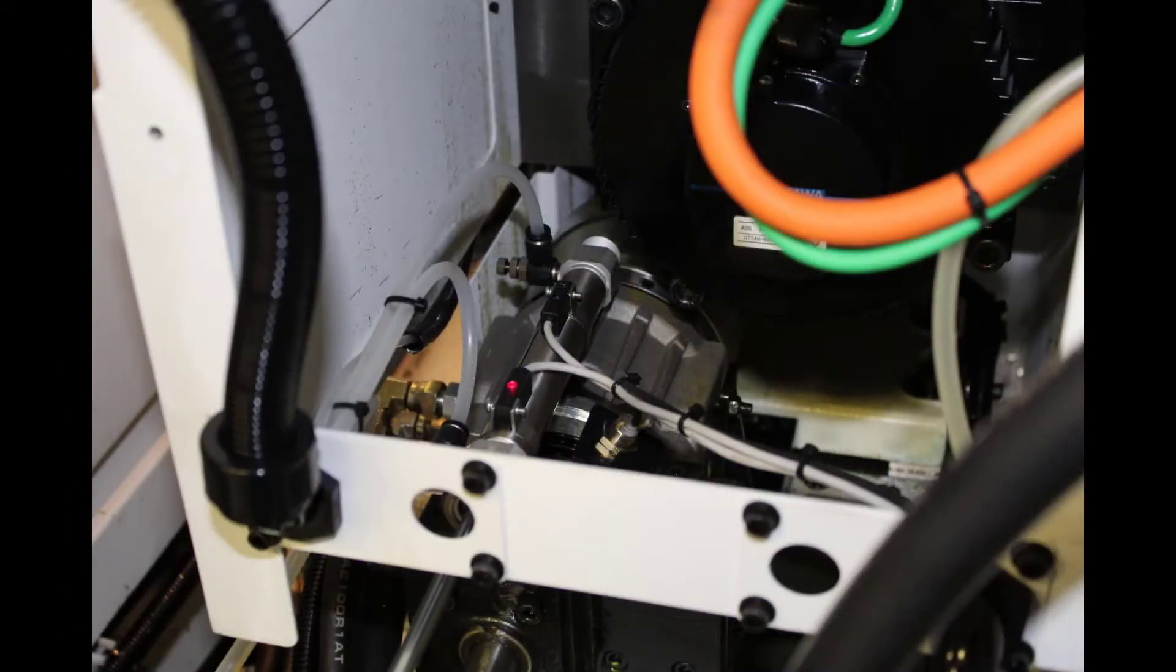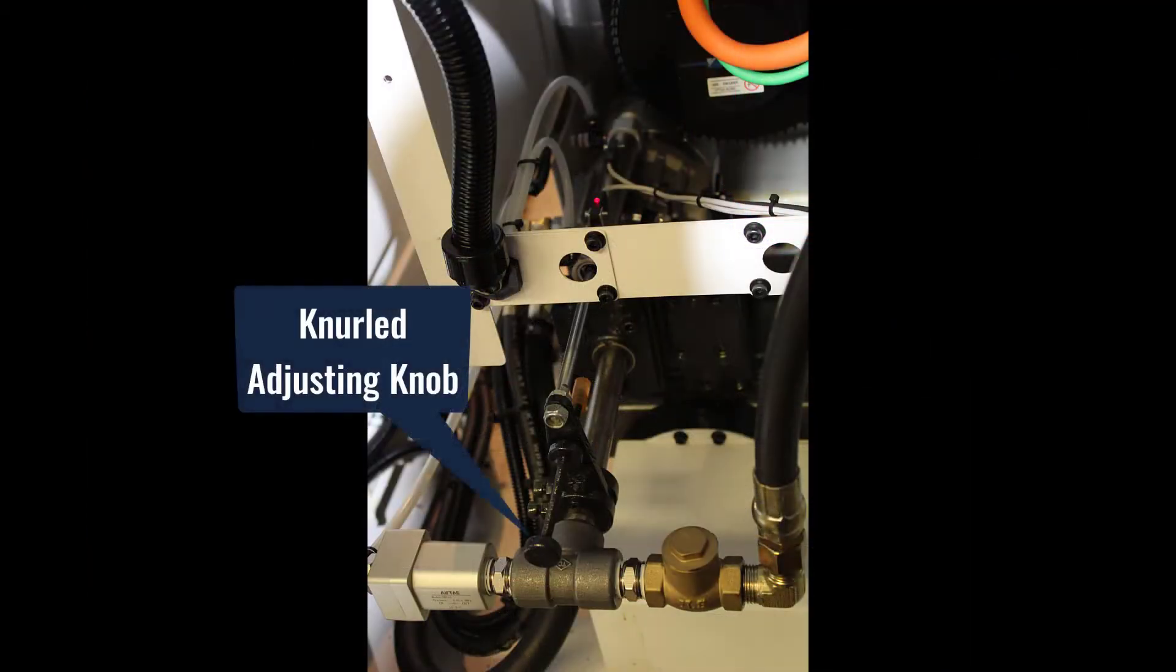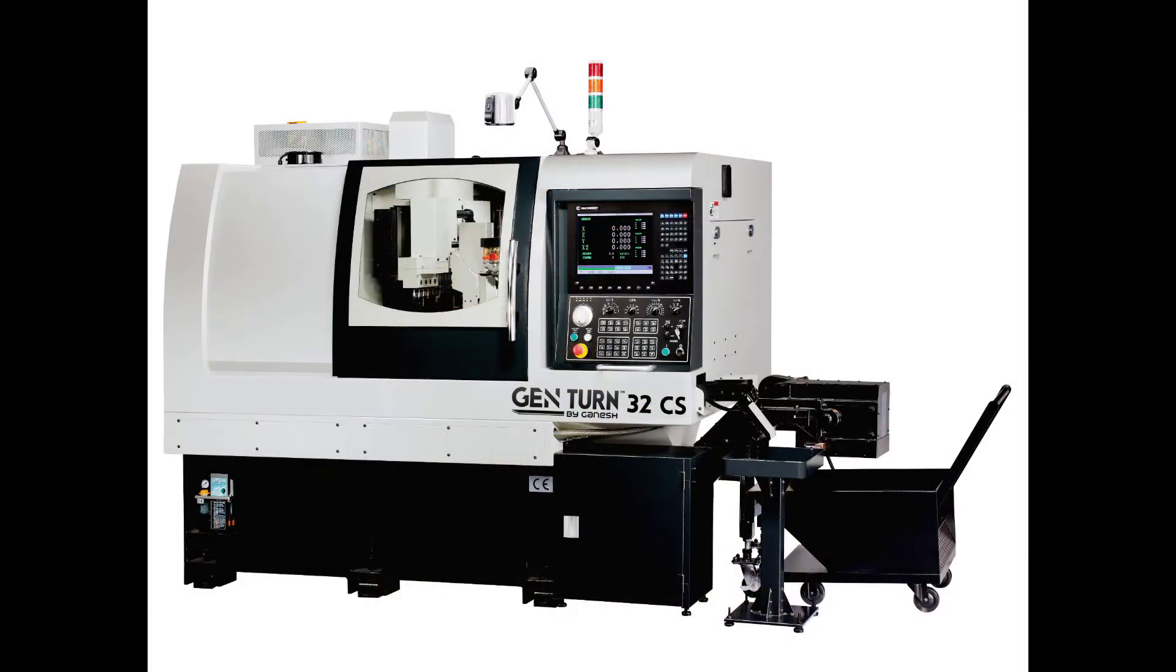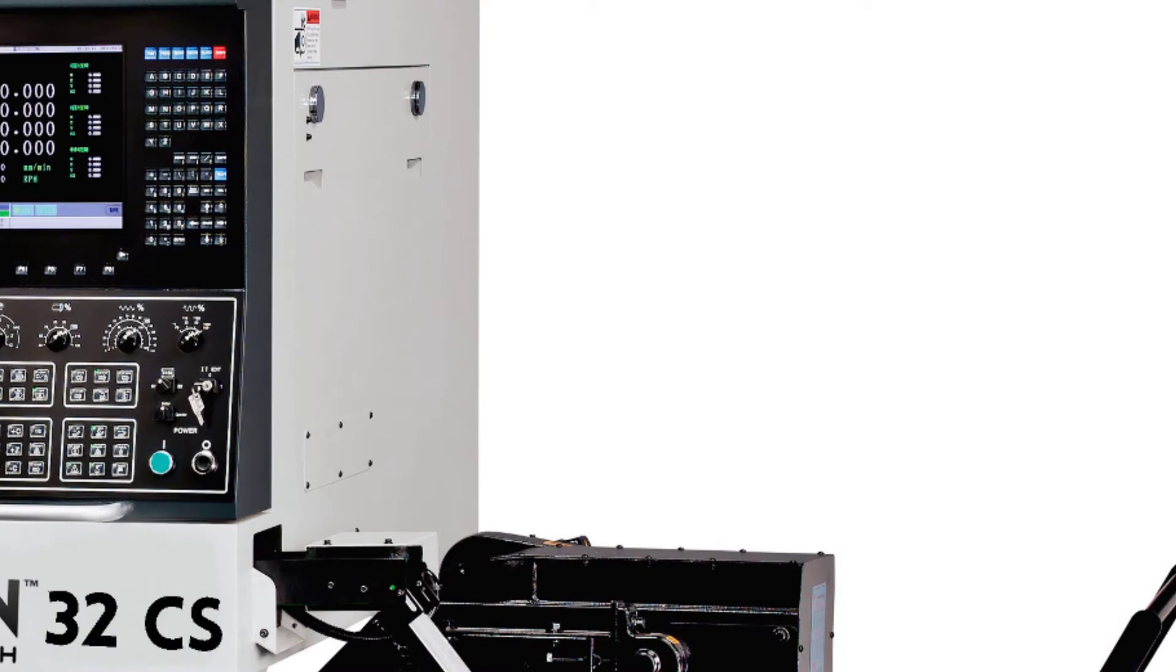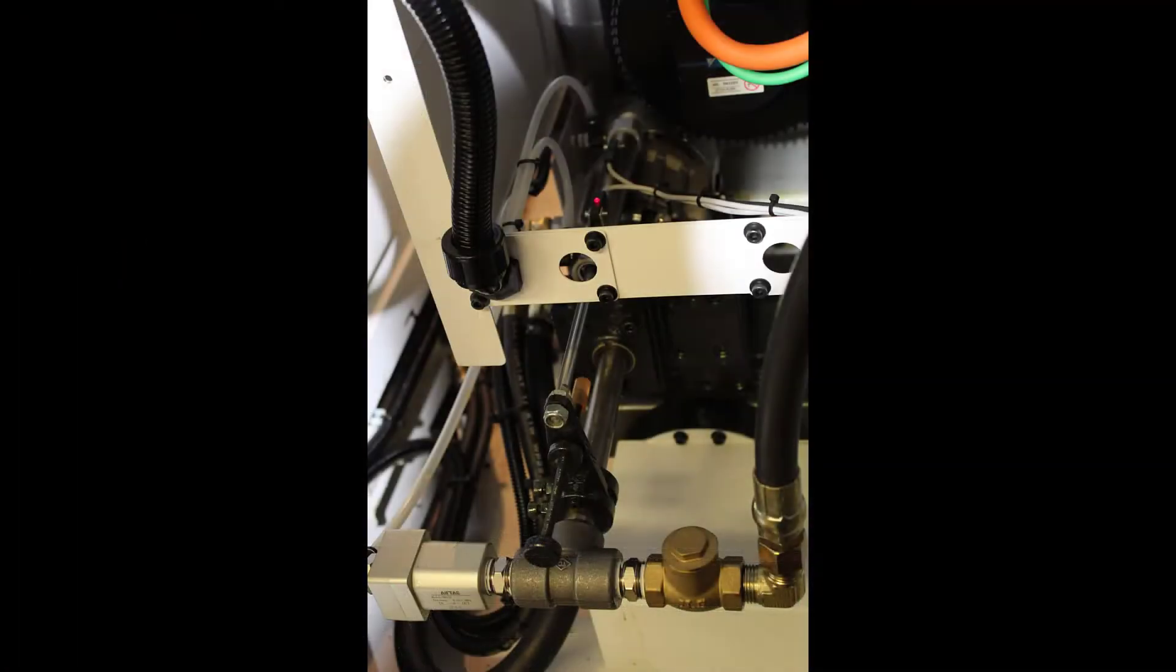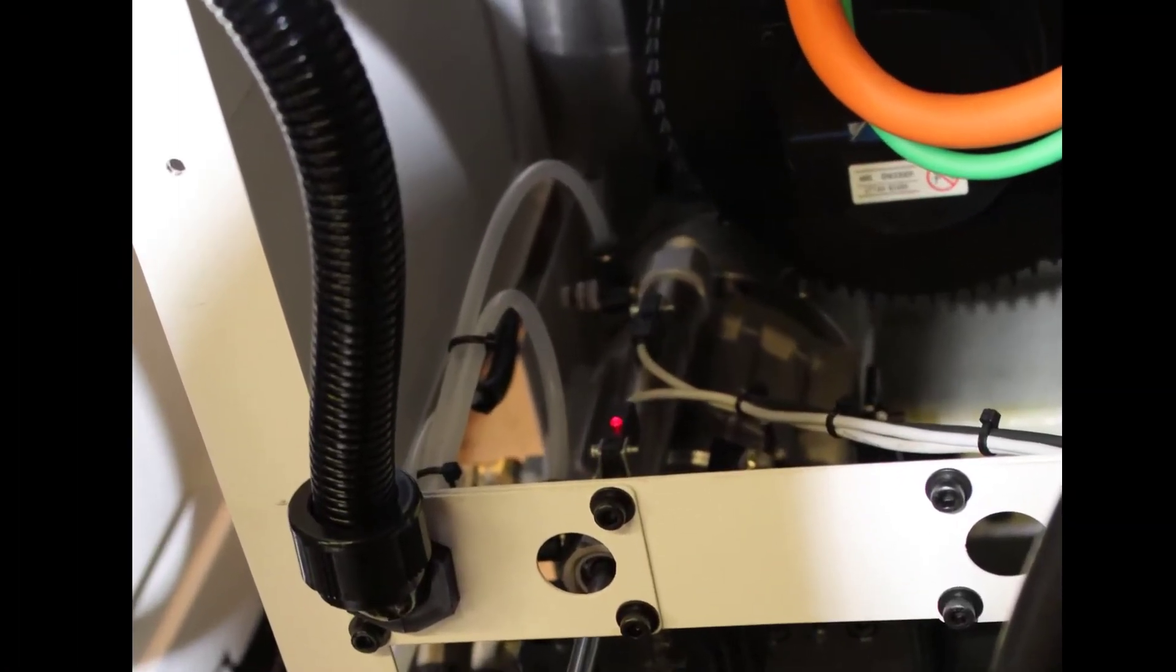The part ejector uses an air cylinder to push the part out of the collet. It is adjusted by a knurled knob located at the back of the subspindle. To set up the part ejector, you will need to remove the outside cover on the right side of the machine and remove the cover on the back of the subspindle.